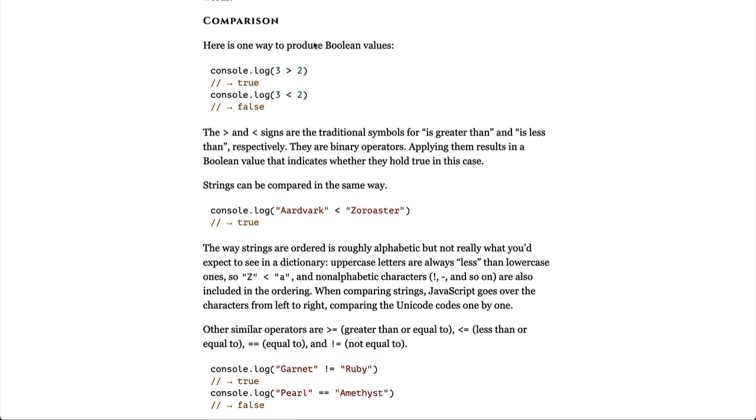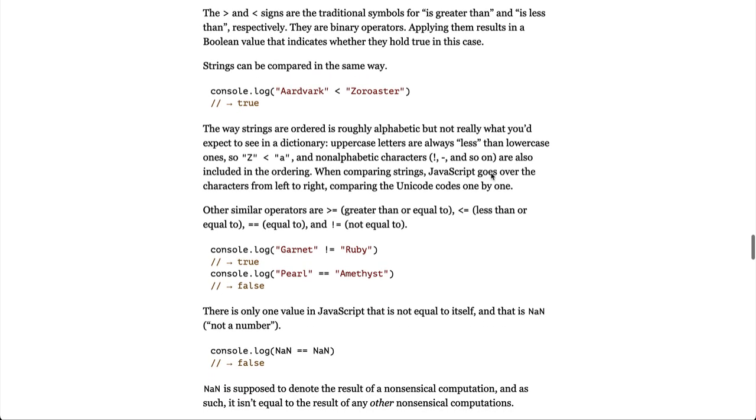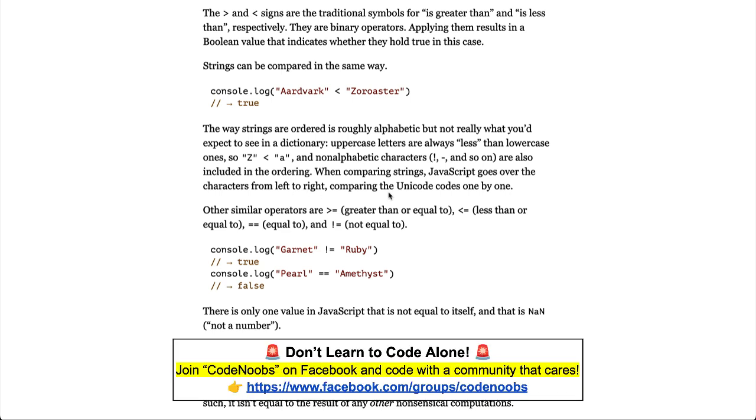Comparison. Here is one way to produce Boolean values. The greater than and less than signs are the traditional symbols for is greater than and is less than, respectively. They are binary operators. Applying them results in a Boolean value that indicates whether they hold true in this case. Strings can be compared in the same way. The way strings are ordered is roughly alphabetic, but is not really what you'd expect to see in a dictionary. Uppercase letters are always less than lowercase ones, so uppercase Z is less than lowercase a, and non-alphabetic characters, exclamation point, dash, and so on, are also included in the ordering. When comparing strings, JavaScript goes over the characters from left to right comparing the Unicode codes one by one.